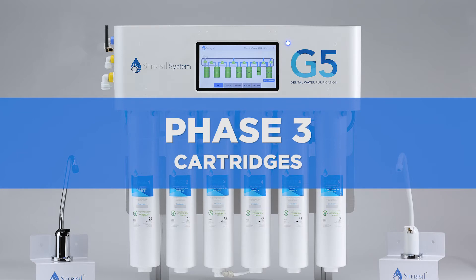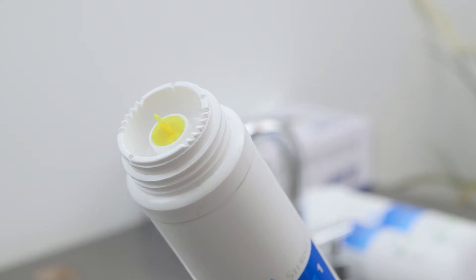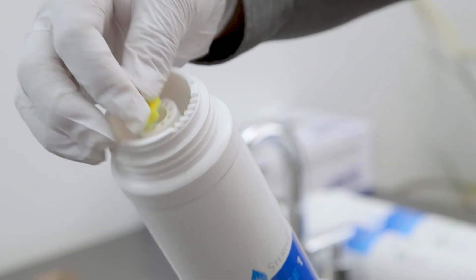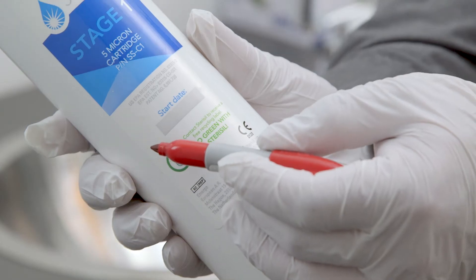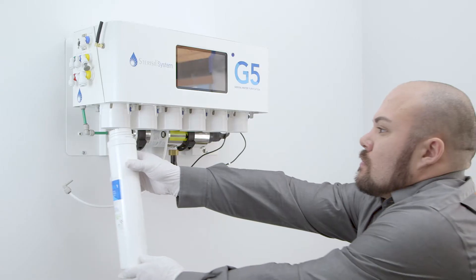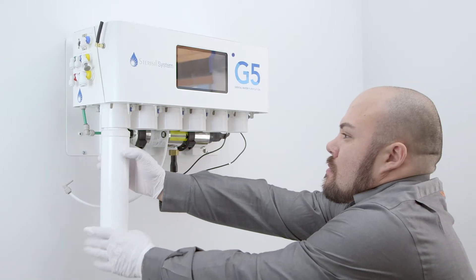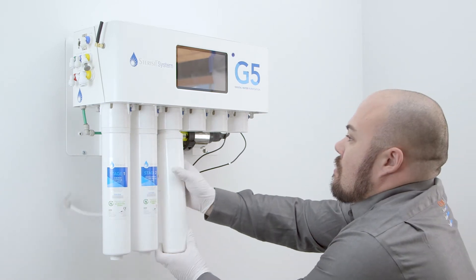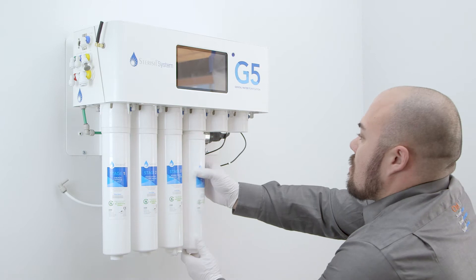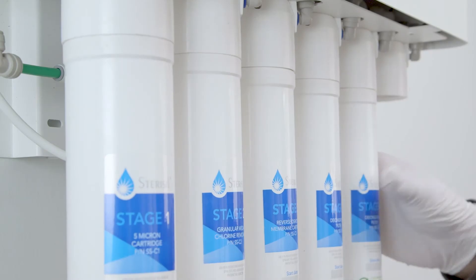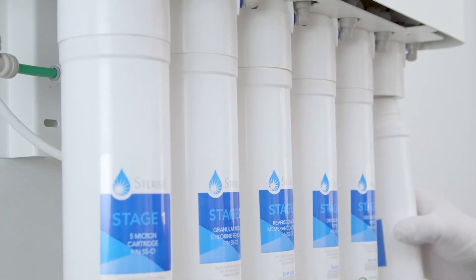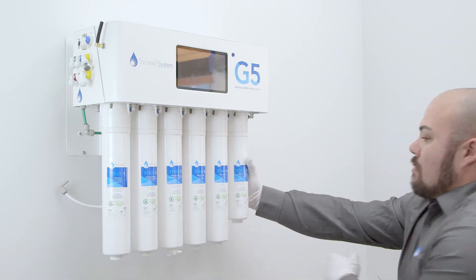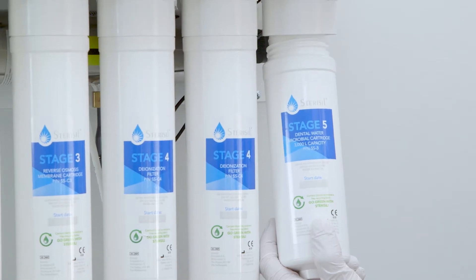Phase three, cartridges. Before you install each cartridge, remove the yellow cap from the top and write the date with permanent marker. Start by inserting the cartridges from left to right, beginning with stage one. Please note there are two stage four cartridges. They'll both be positioned interchangeably in ports four and five. Please note the size of your stage five cartridge will vary depending on its capacity rating.